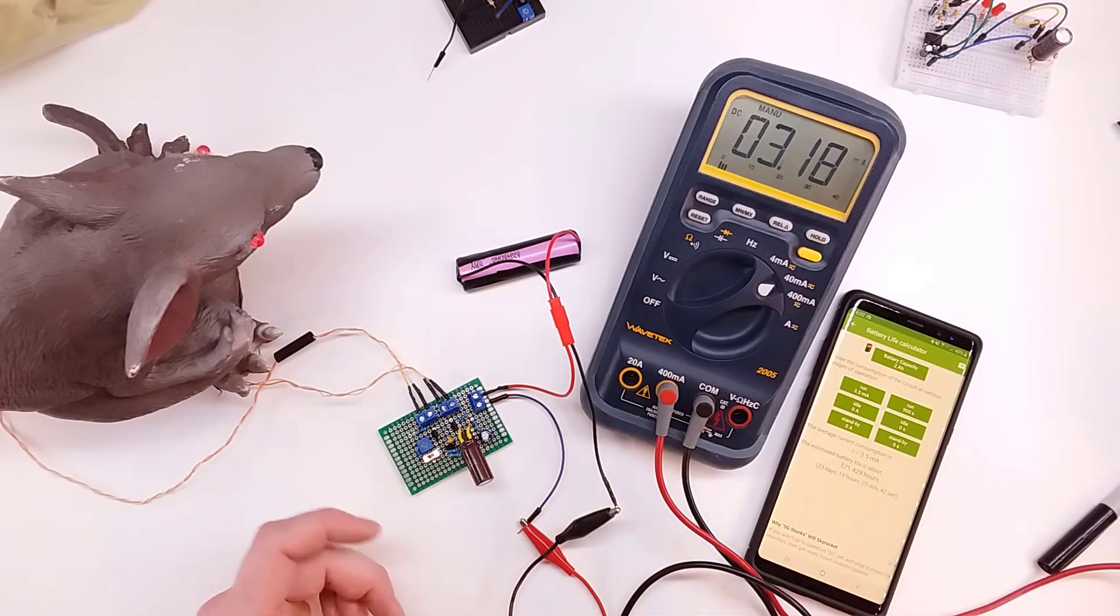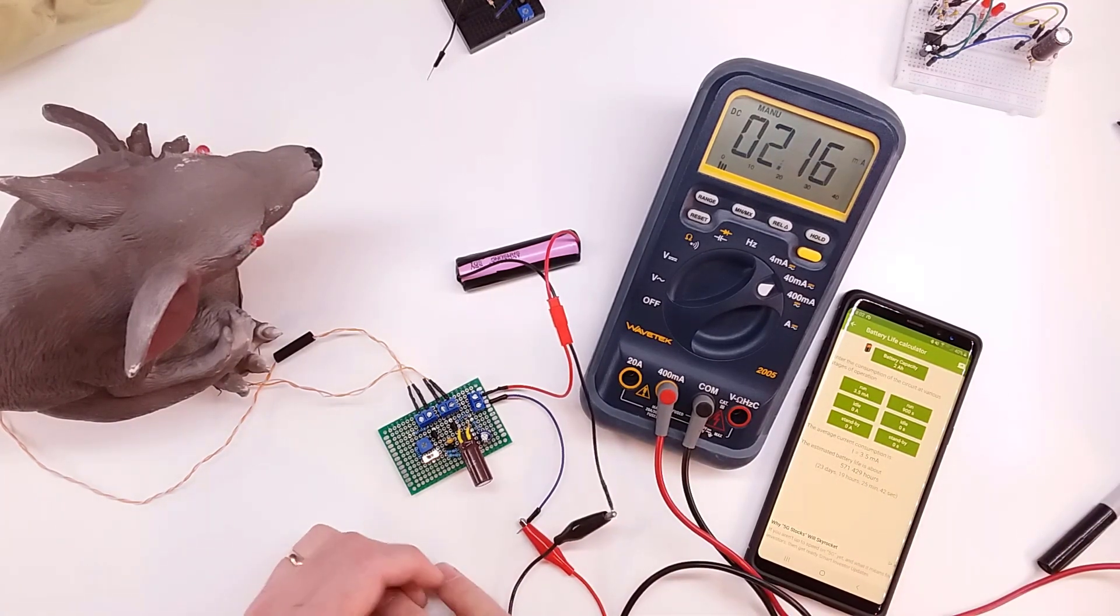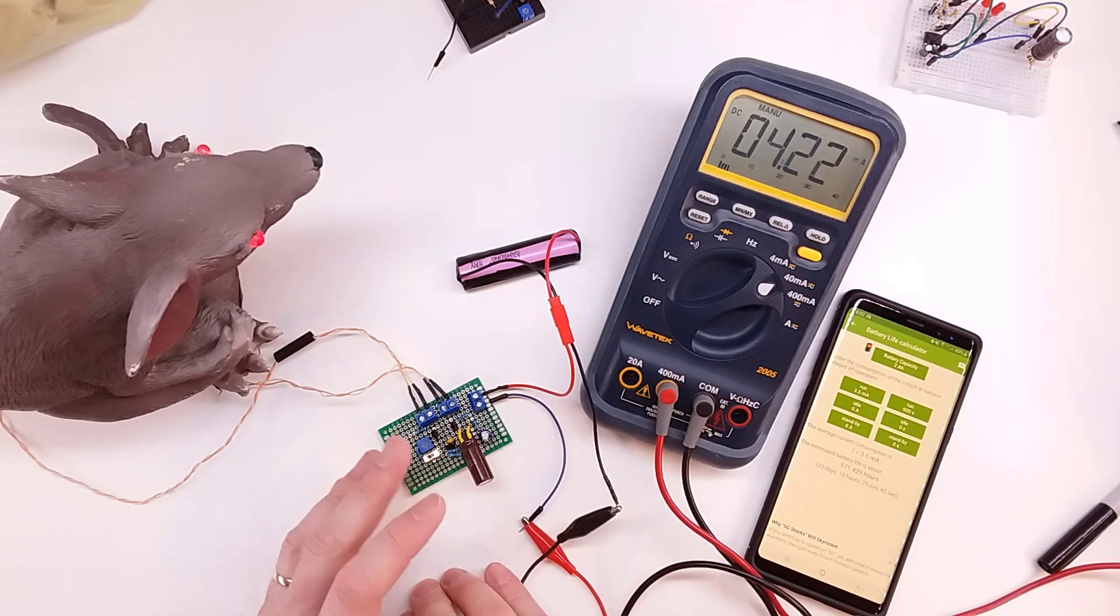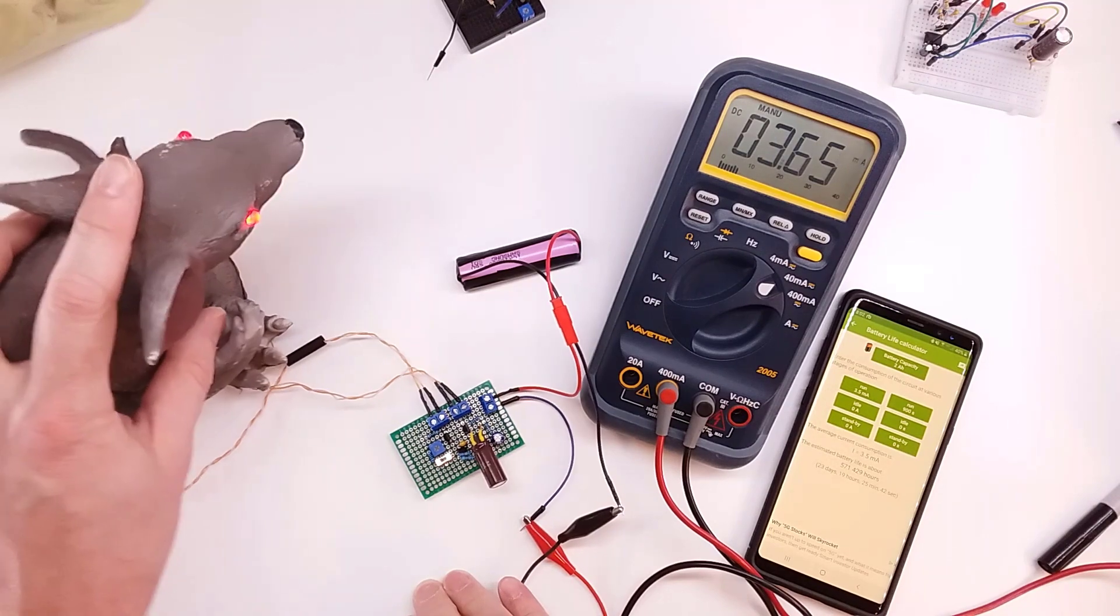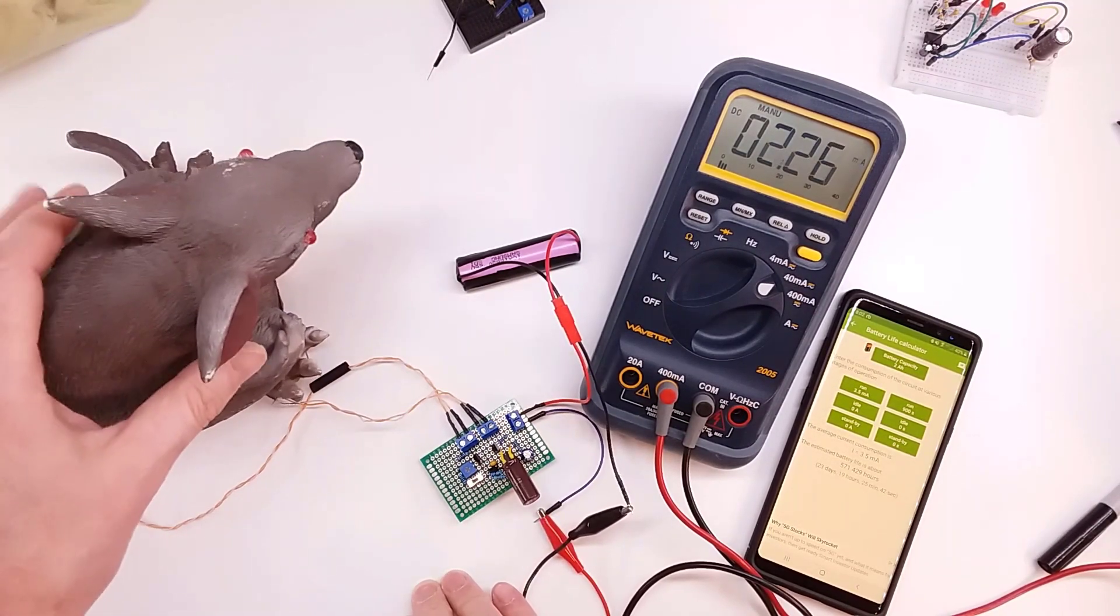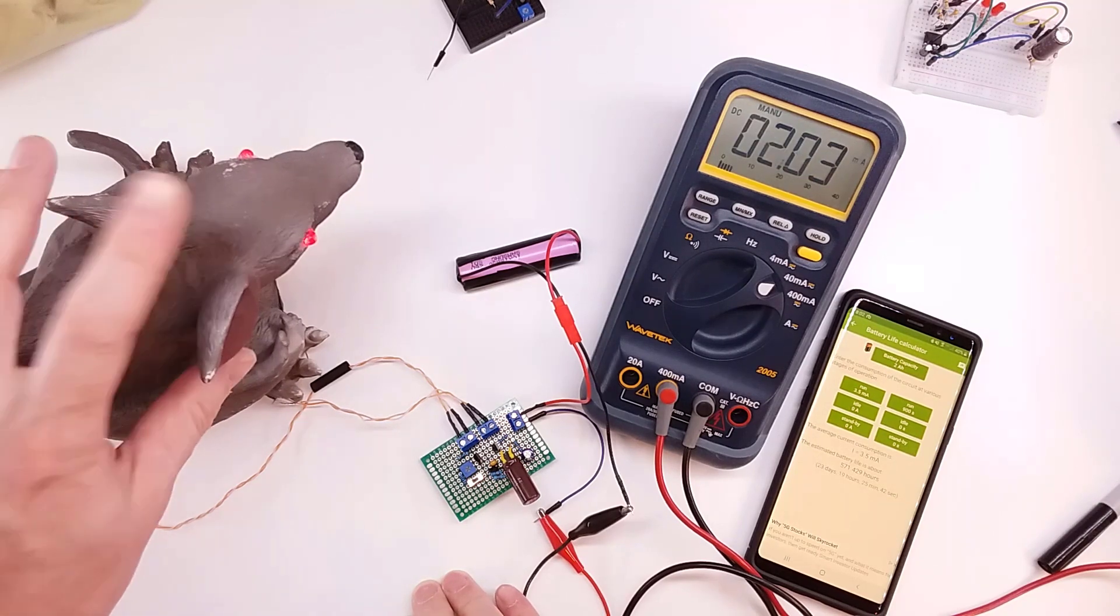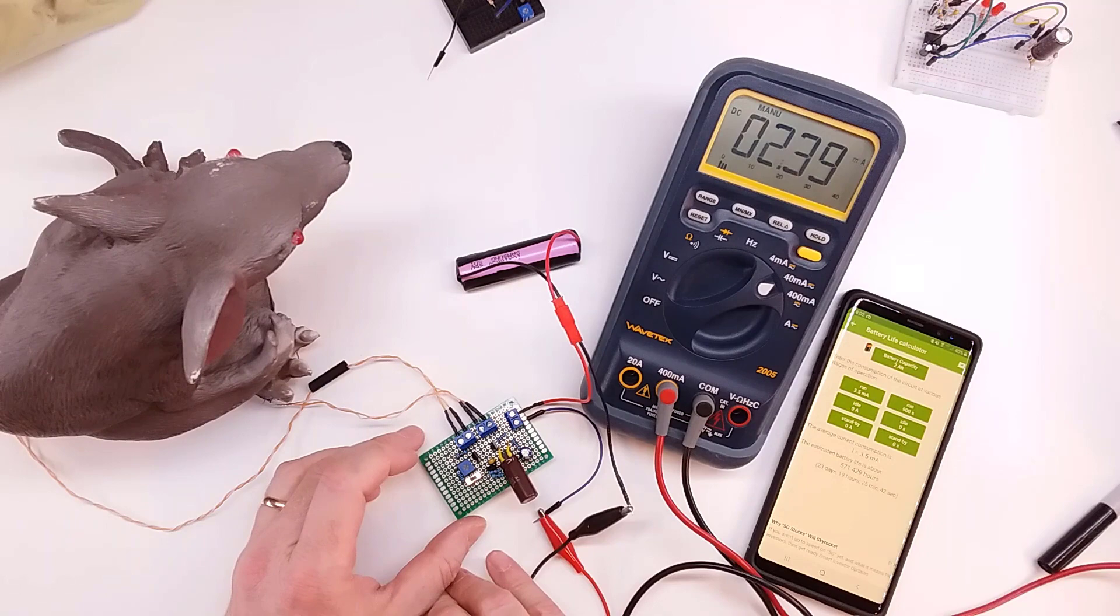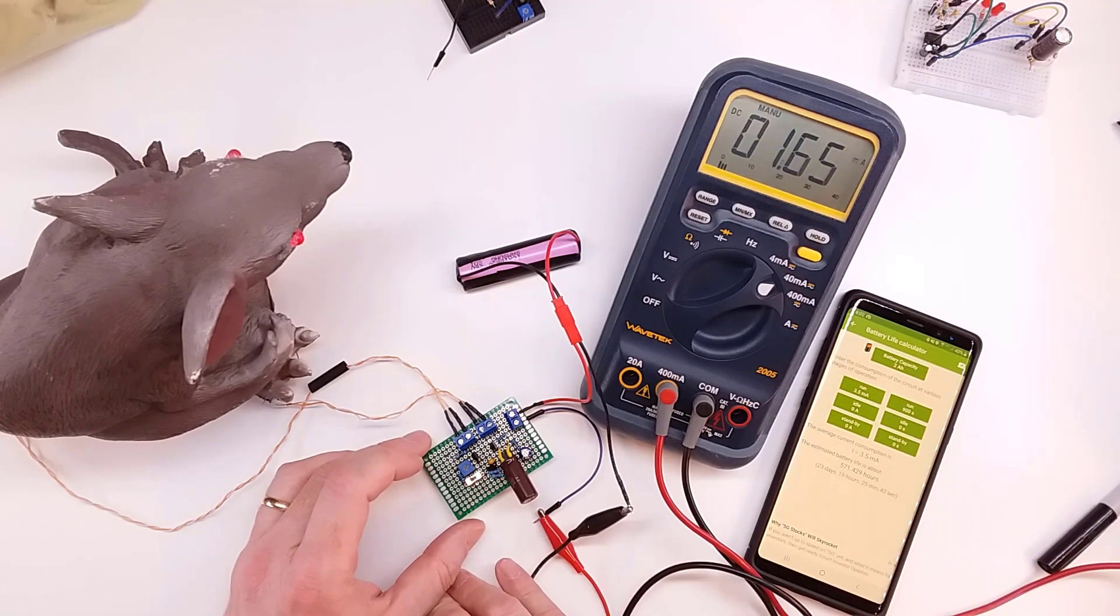This calculates to be roughly 23, 24 days of runtime, which is pretty good. So that would be 24-7. So if we were to set this up and put this outside at around Halloween time, or maybe even Christmas time, it would run for, you know, give or take about 24, 25 days, constantly off of one single battery. And then you can either charge, change the battery or go ahead and recharge the battery.